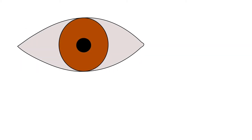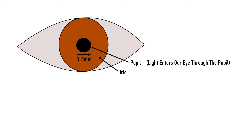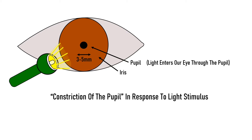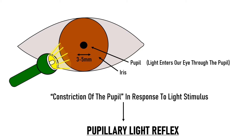We will start with the very basics. This is the diagram of the eye. This circular brown structure is the iris and this round gap in the center of the iris is known as the pupil. The normal size of the pupil ranges from 3 to 5 mm in diameter. Light enters our eye through the pupil. When bright light is shown on the pupil, the pupil responds by decreasing in size. This is known as constriction of the pupil, and this constriction in response to light stimulus is known as pupillary light reflex.